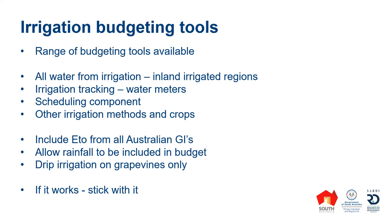Irrigation budgeting tools aren't a new thing — they've been around for 20 or 30 years, and there's quite a range of different tools available with different levels of sophistication. Some tools focus on water applied from irrigation and don't take much account of rainfall — those are quite well matched for some inland irrigated regions. Some tools allow you to track your irrigation during the season with water meter readings. Some have a more detailed scheduling component, and some are broader than just vineyards — covering other irrigation methods like overhead sprinklers, or other irrigated crops like citrus, almonds, and even broad-acre crops.